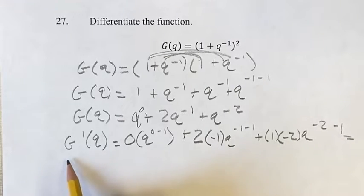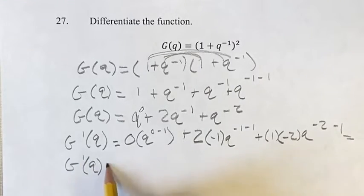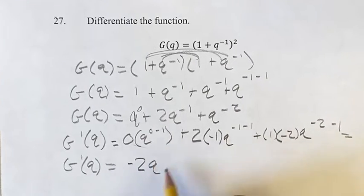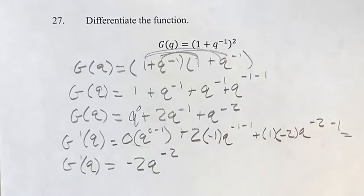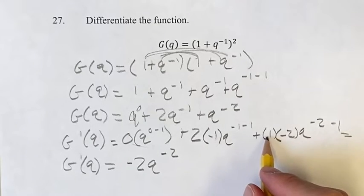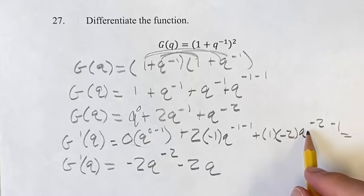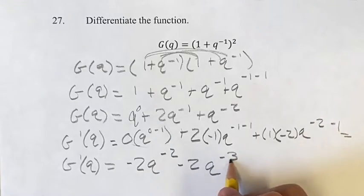Now, this is something we can simplify. G prime of q equals 0, so we ignore that term. We get negative 2q to the minus 1 minus 1 is negative 2, q to the negative 2. Plus 1 times negative 2 is minus 2, q to the negative 2 minus 1 is negative 3.